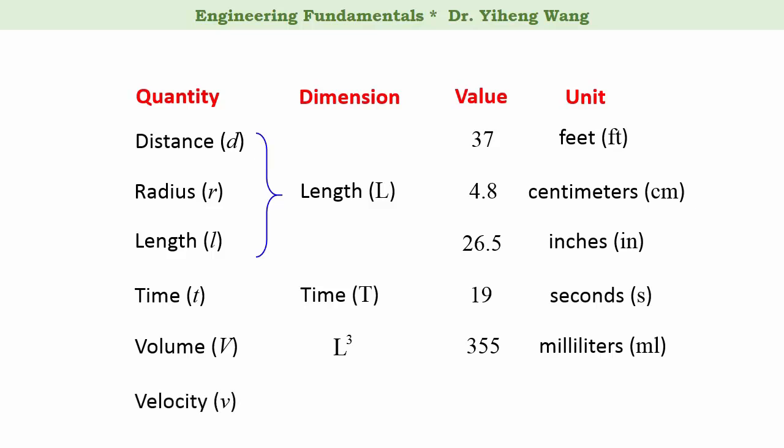Another physical quantity is velocity, which can be simply defined as the distance traveled over a certain time — in other words, distance divided by time. Therefore, its dimension is length L over time T, or in exponential notation, L to the first power multiplied by T to the negative first power. The velocity of a car at this moment could be 45 in the unit of miles per hour. As you can see, the dimensions of both volume and velocity are derived from base dimensions length and time.